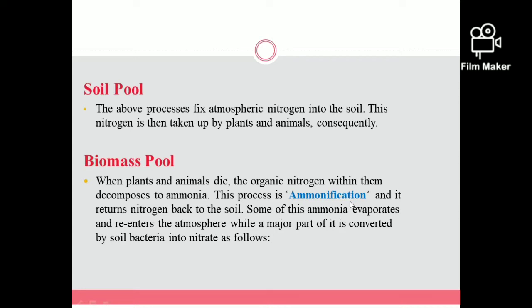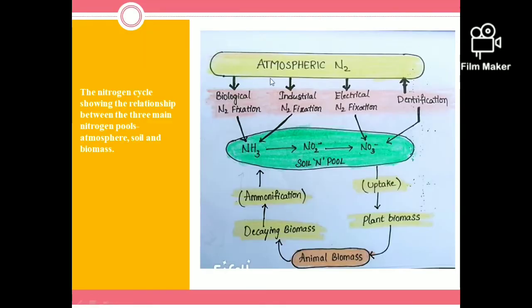If you see the whole process of the nitrogen cycle: atmospheric nitrogen undergoes biological nitrogen fixation, industrial nitrogen fixation, and electrical nitrogen fixation to form ammonium. This ammonia then enters the soil and forms nitrates. Through denitrification, nitrogen is converted back to the atmosphere. Through electrical nitrogen fixation, nitrates are also produced in the soil.